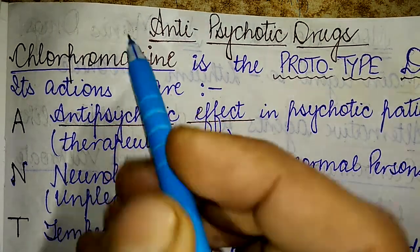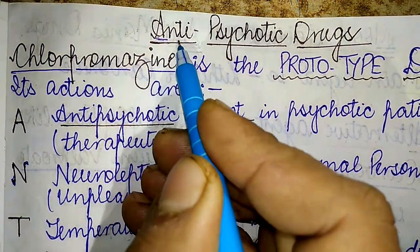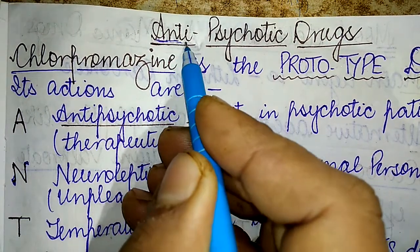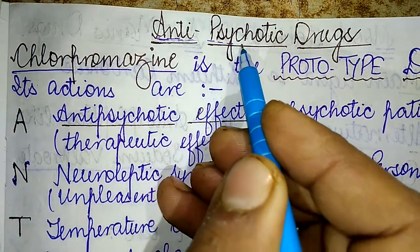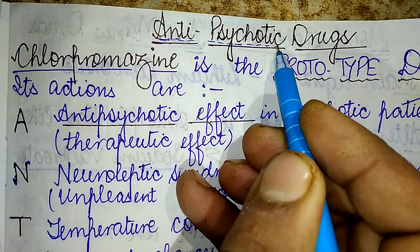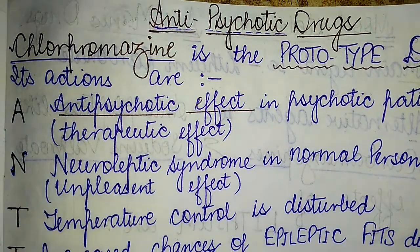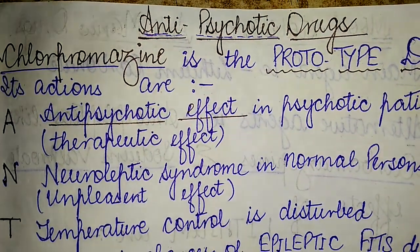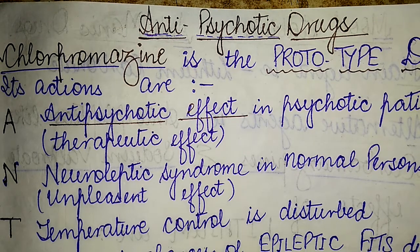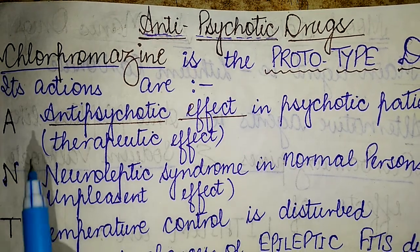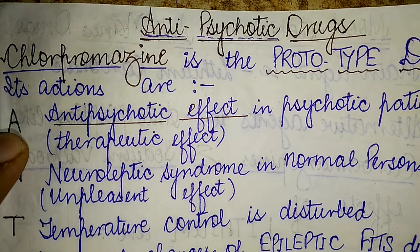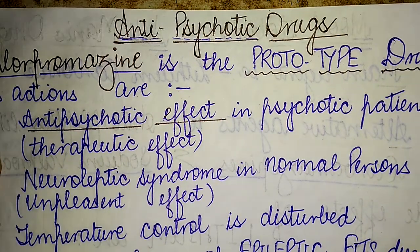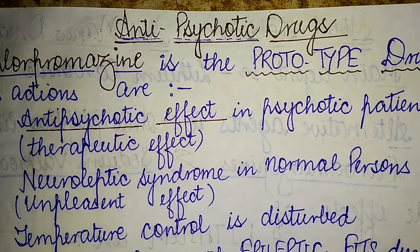Every letter of A-N-T-I-P-S-Y-C-H-O-T-I-C corresponds to one of the actions it elicits in the human body. The first letter, A, stands for the anti-psychotic effect in psychotic patients — that is the therapeutic effect of the anti-psychotic drugs.